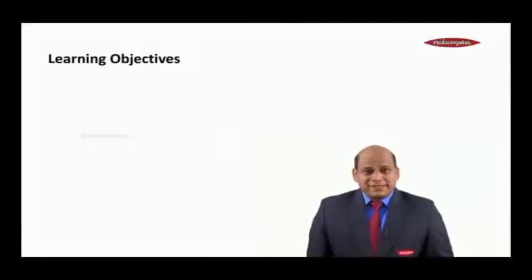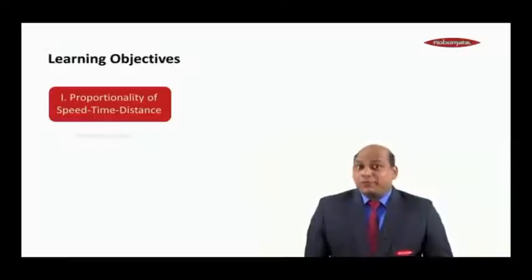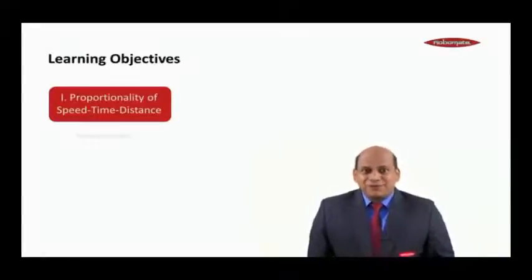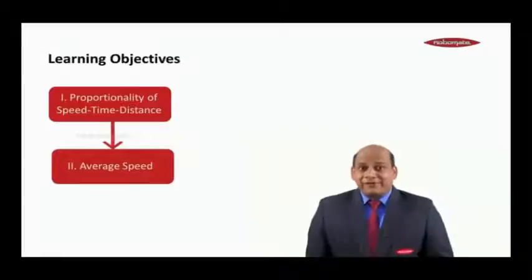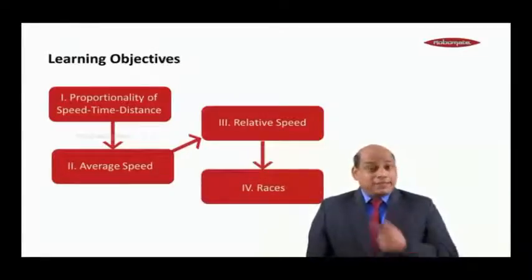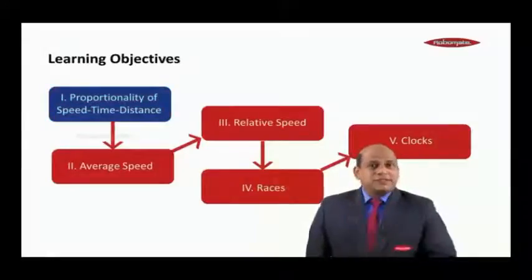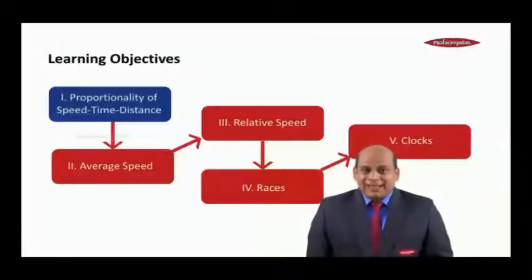We are going to learn different concepts in this chapter. The first thing is the relationship between speed, time and distance, which we call the proportionality of speed, time and distance. From there we will move on to the concept of average speed. Then we will do something called relative speed, then application of relative speeds namely in races, and then the last topic called clocks.